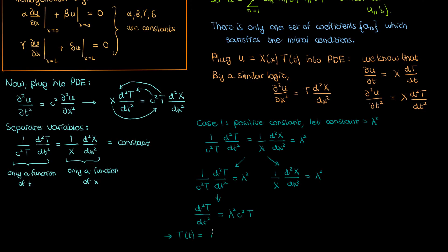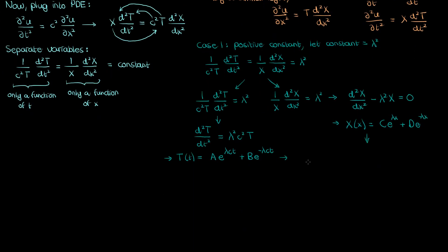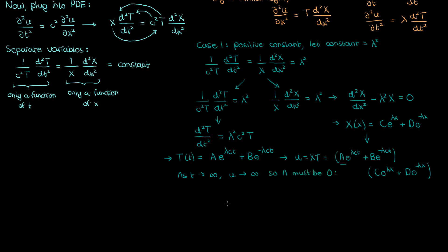If we rearrange the equation in T we get that T is the sum of two exponential functions of time, where A and B are integration constants. Similarly for the differential equation involving x, we can write X as the sum of two exponentials in x, where C and D are arbitrary integration constants. Because the solution u is the product of T and X, we can write it down accordingly. The problem is that as time approaches infinity this solution blows up because of the positive exponential term in time, so A must be zero. This leaves an exponential that decays with time.